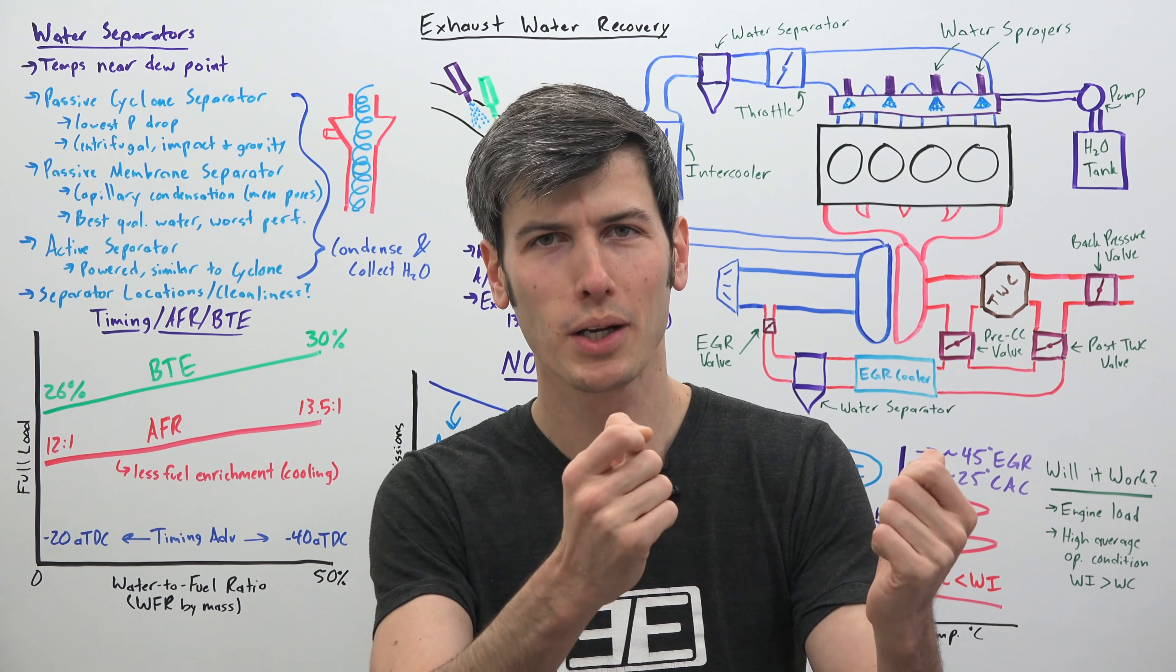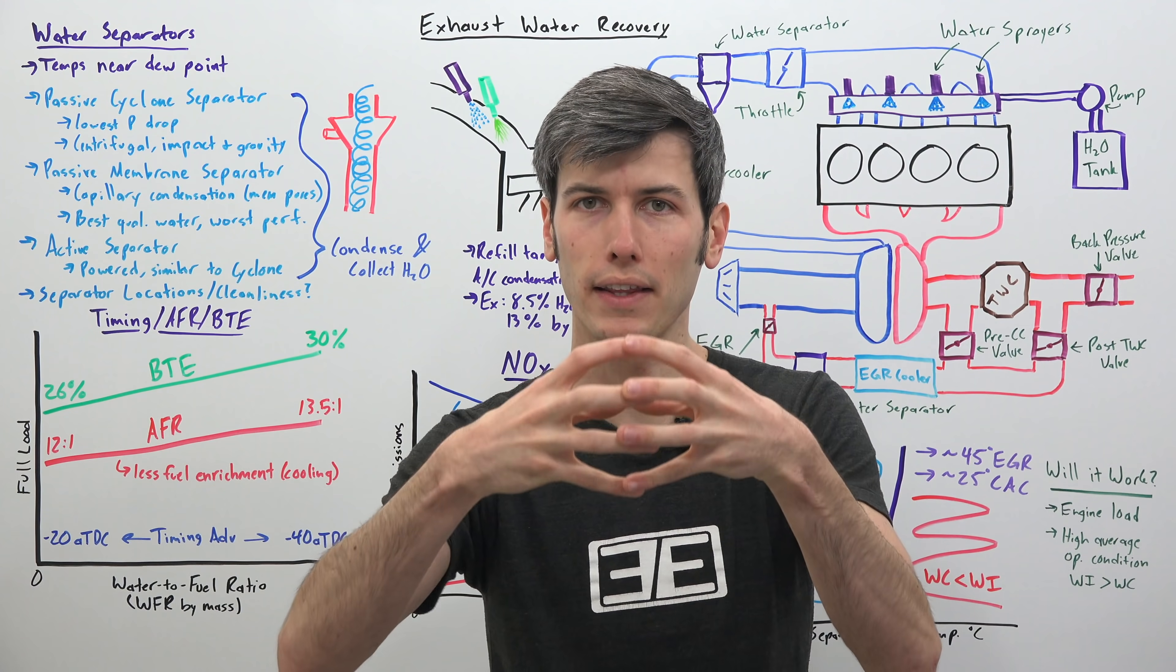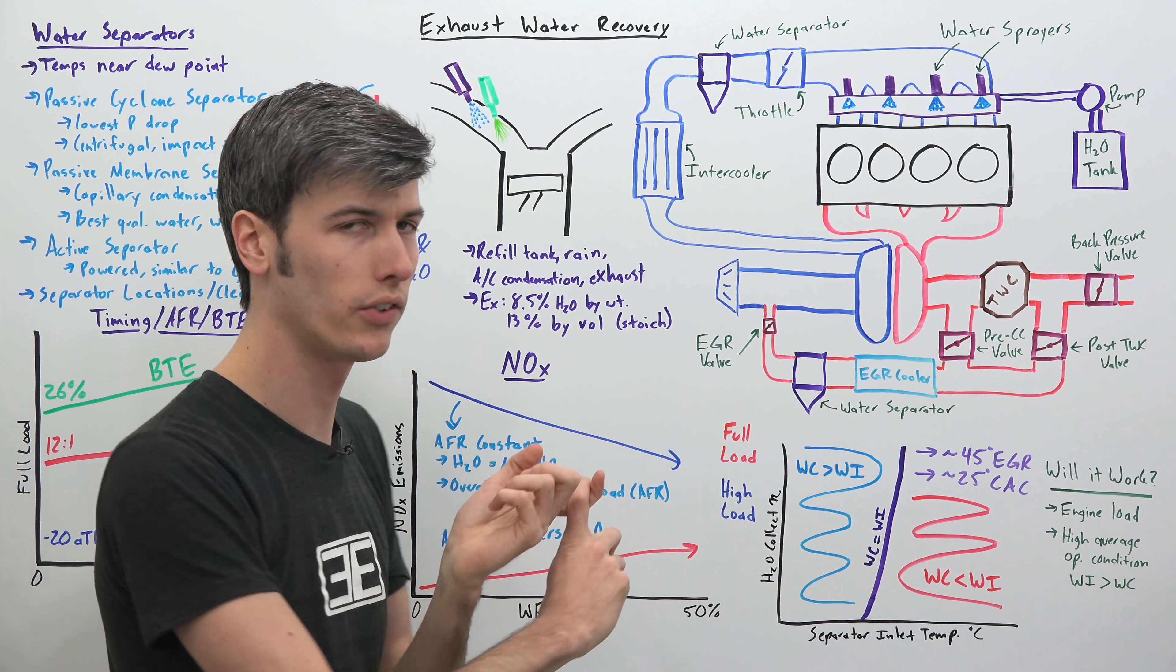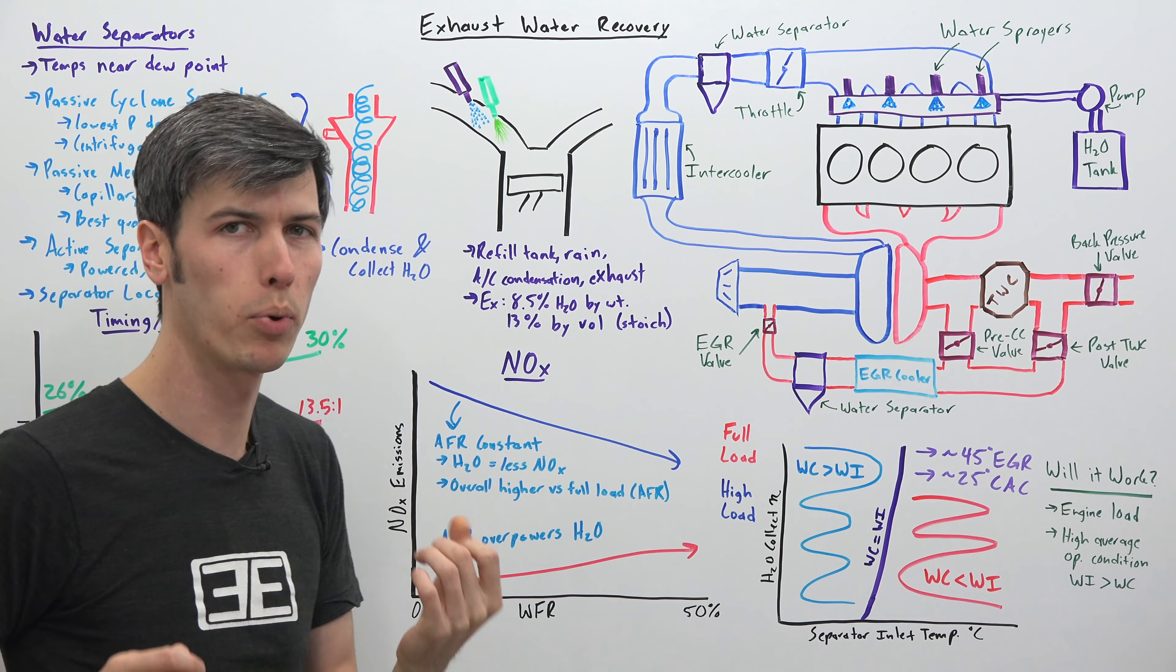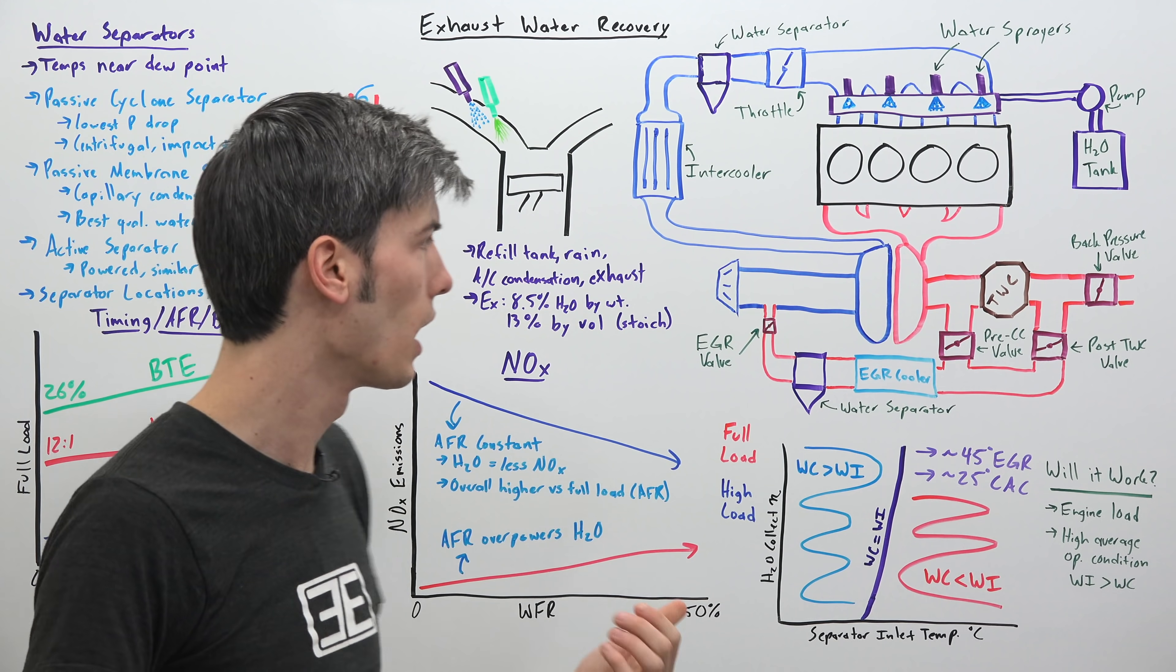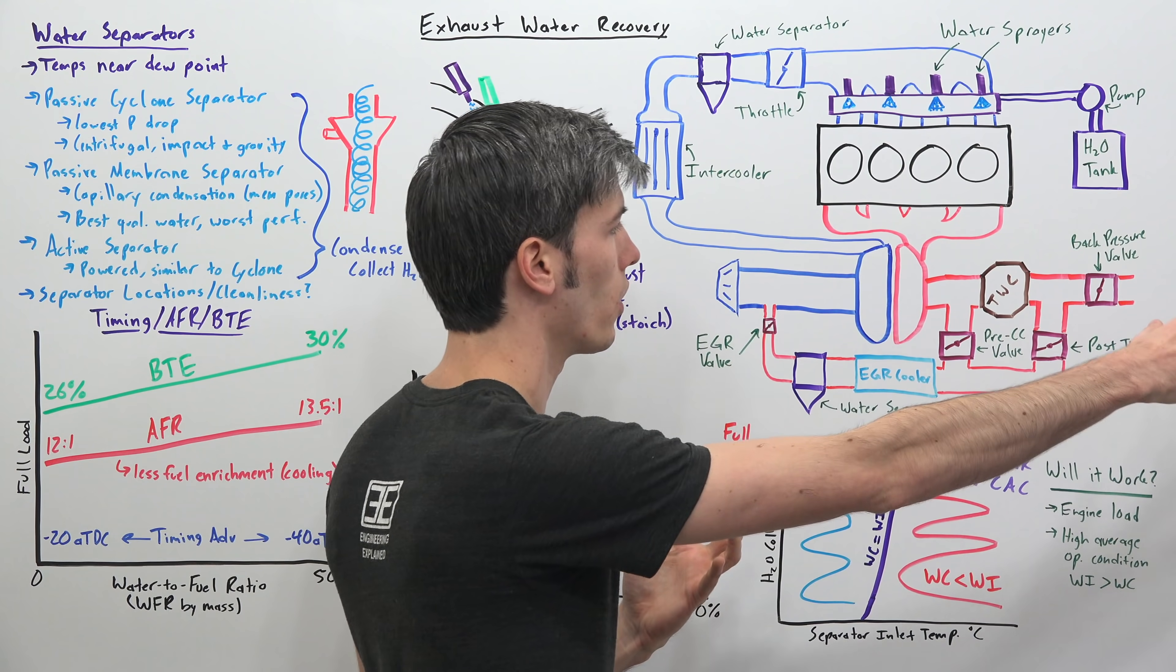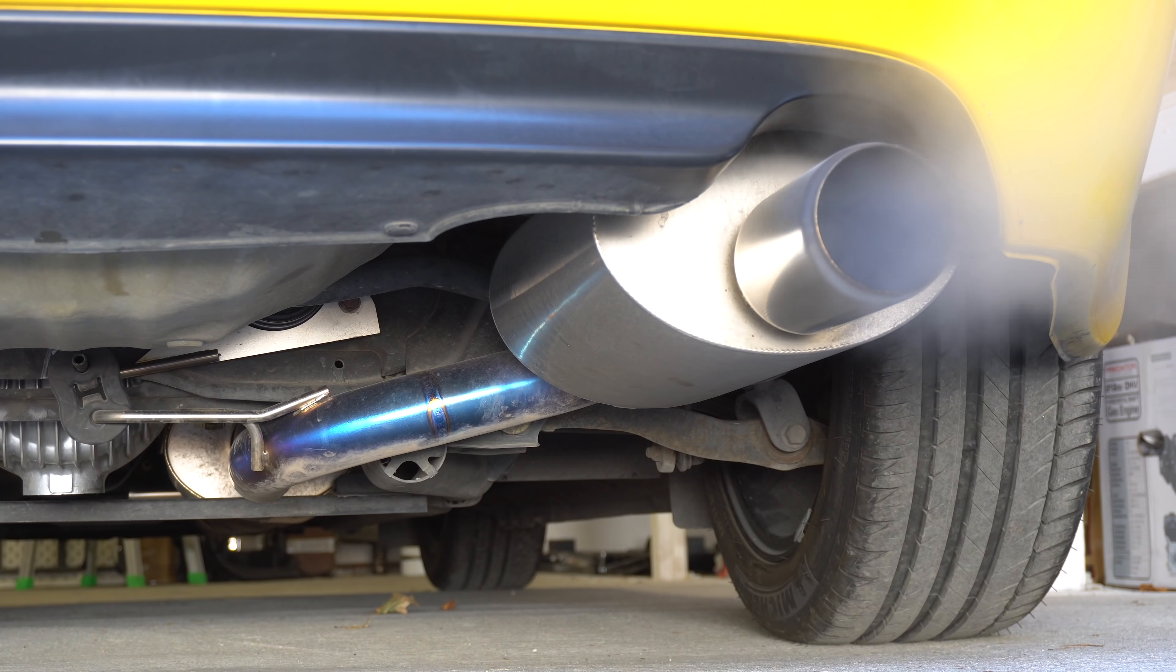Well part of what's happening during combustion is you are taking a fuel, you're adding to that oxygen. You're burning that air and fuel and as a result you have combustion byproducts including CO2 and water. And so exhaust gases are actually 8.5% water by weight, about 13% water by volume. So that means you have a tremendous amount of water going out your exhaust that you could actually recover and reuse in your water injection system.